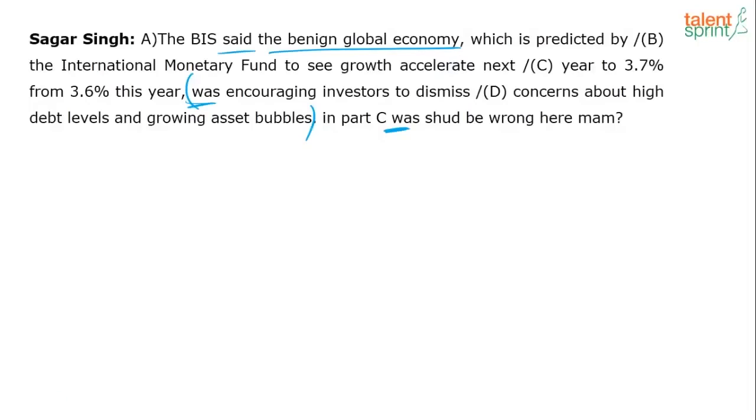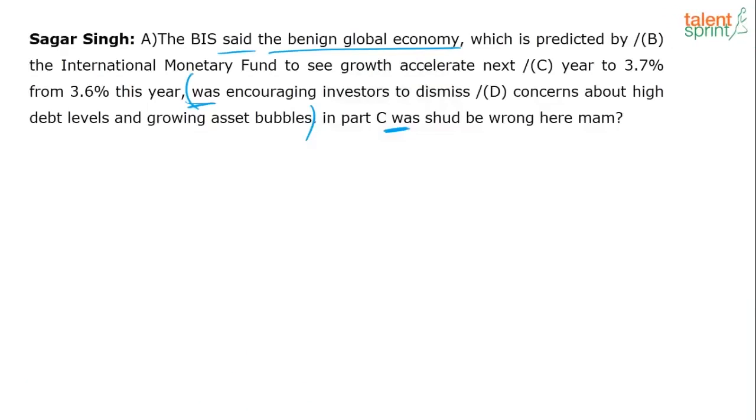Rewriting the sentence with 'is encouraging investors to dismiss concerns about high debt levels and growing asset bubbles' — I still don't see a clear error. Both 'was' and 'is' are fine depending on the tense you're suggesting. Honestly, I would say no error here and move on.